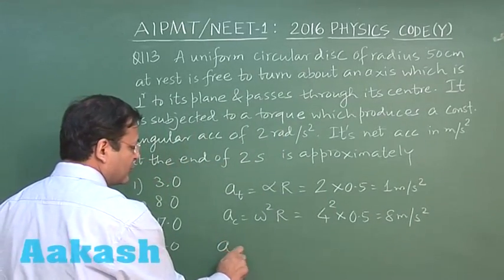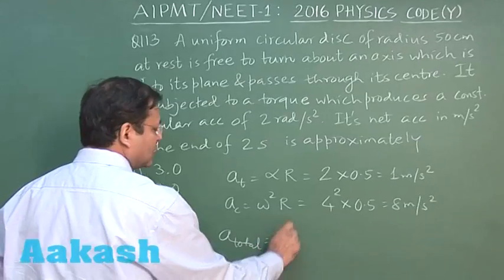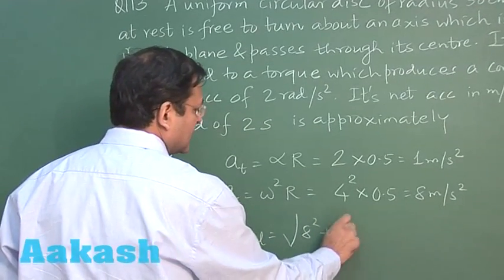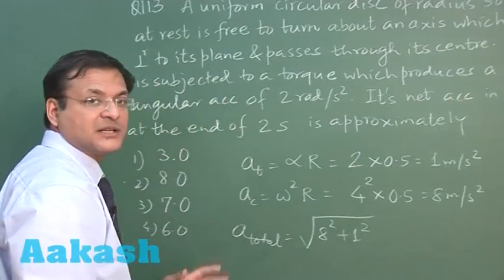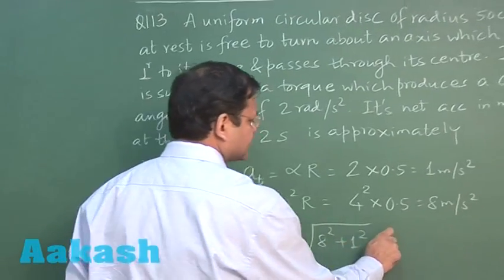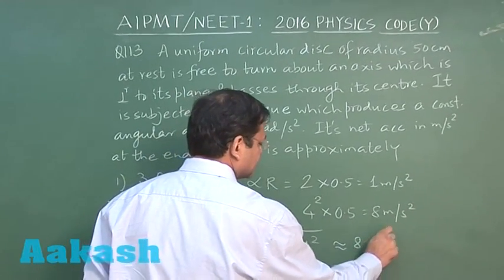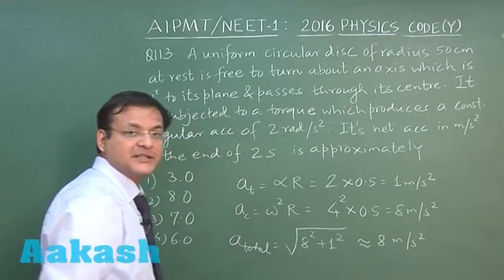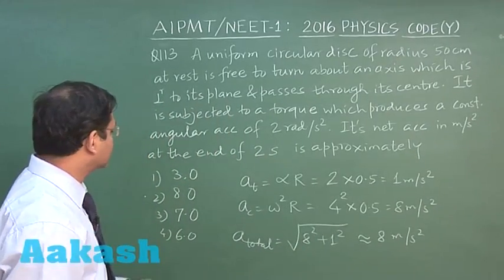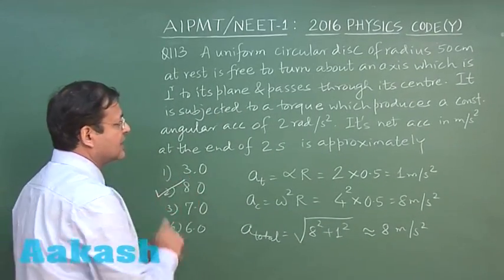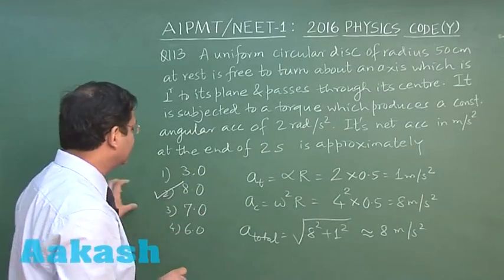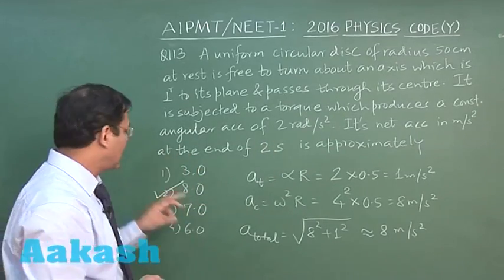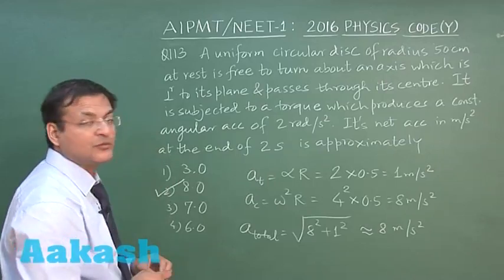Now if you take the Pythagoras of both of them, a total, it will be under root 8 square plus 1 square. Now the closest answer is what? Closest answer is 8. If you take the Pythagoras of these two, still it will be approximately 8. So they are asking you to calculate the approximate answer. It will be 8 meter per second square. I am marking answer 2 for this question 113.